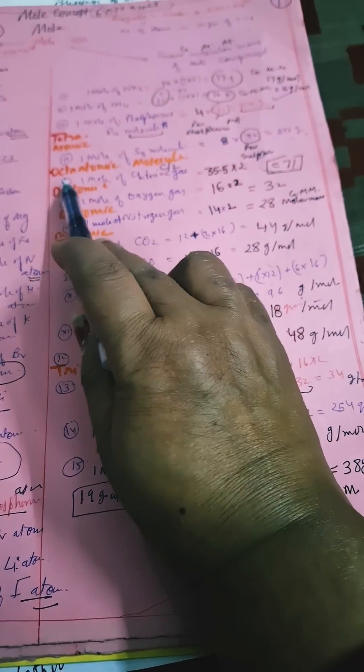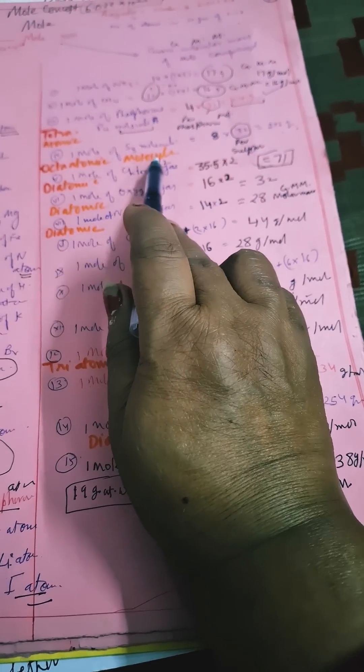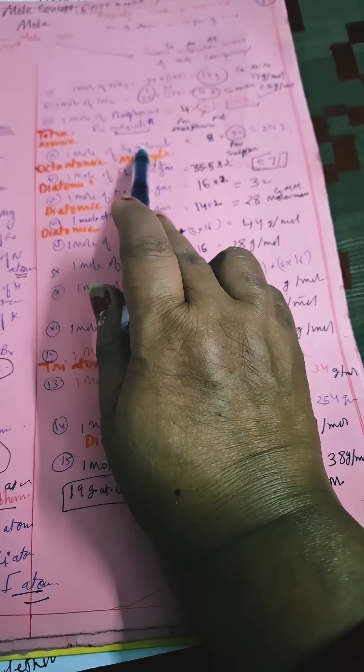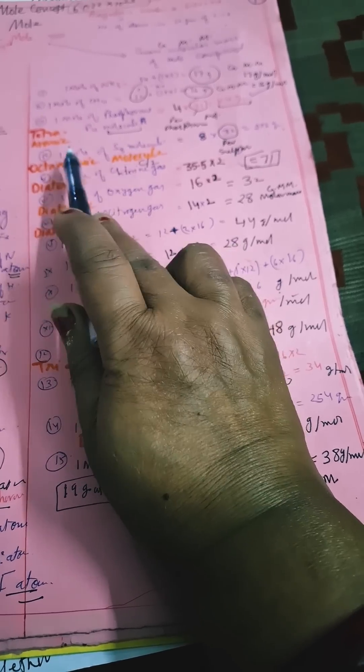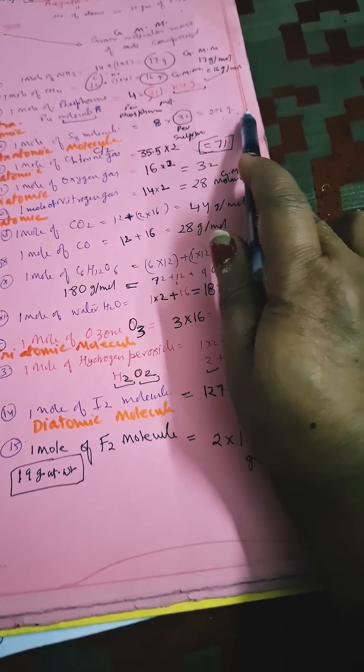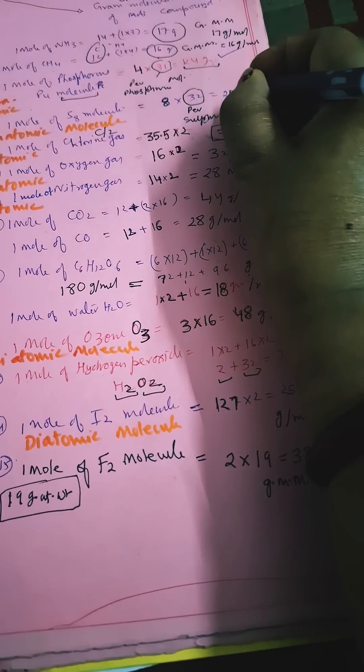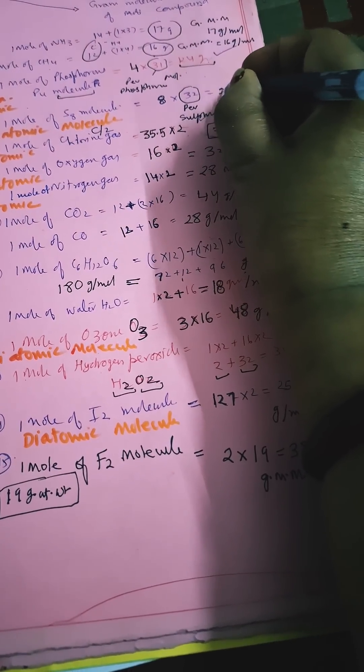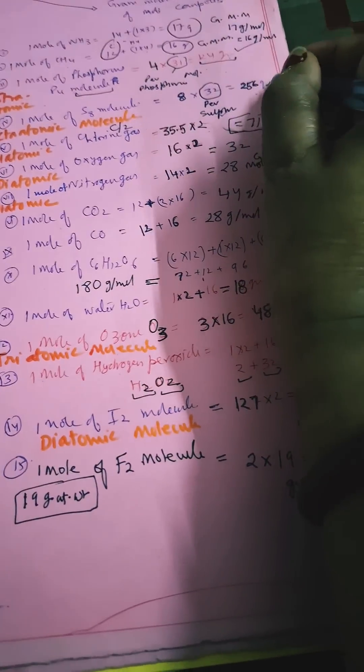One mole of S8 molecule - it is octatomic, means 8 atoms present in one molecule. So one mole will have 8 × 32. Calculate it, it will be 256 grams per mole.